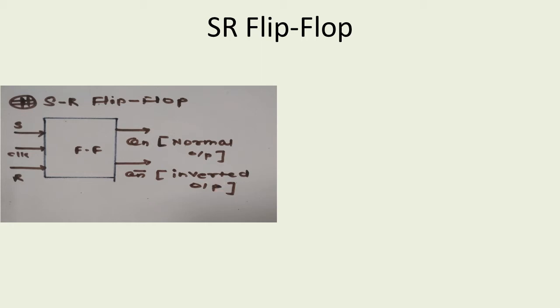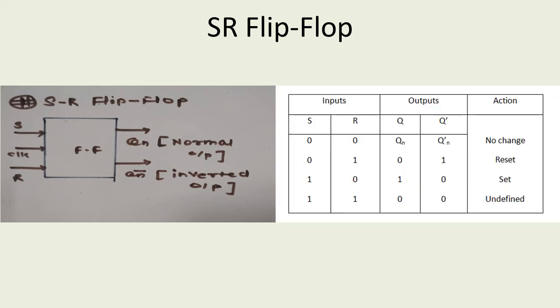In some cases when writing or dealing with a truth table, we can write it as Qn plus 1 that indicates next state outputs. Based on the present input combinations of S and R, our outputs are going to be changed.